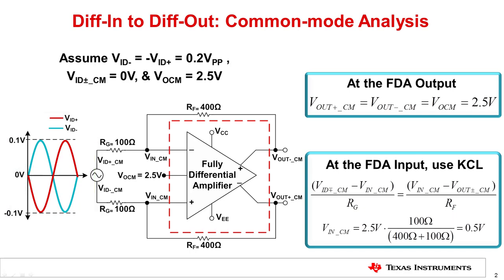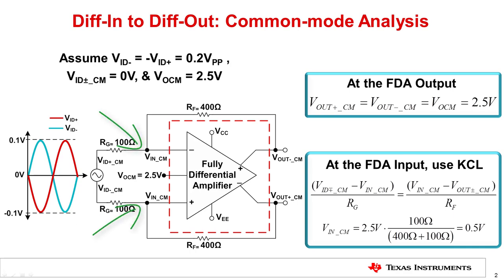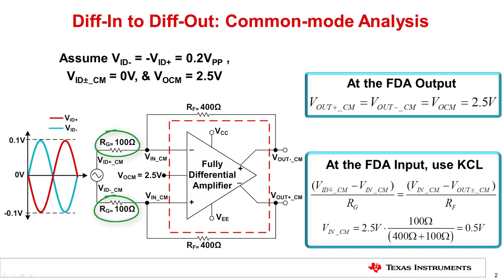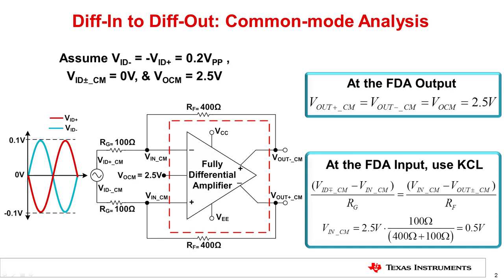When I specify the common mode of the input signal, I am referring to the voltages at the inputs of RG. The common mode input specification of the amplifier found in the data sheet is the voltage at the amplifier's input pins shown here. Also, assume that the output common mode of the amplifier is set to 2.5 volts. The gain resistors RG are 100 ohms each, and the feedback resistors RF are 400 ohms each. We will analyze the common mode and differential components individually, and then use the principle of superposition to determine the amplifier's complete gain transfer function.